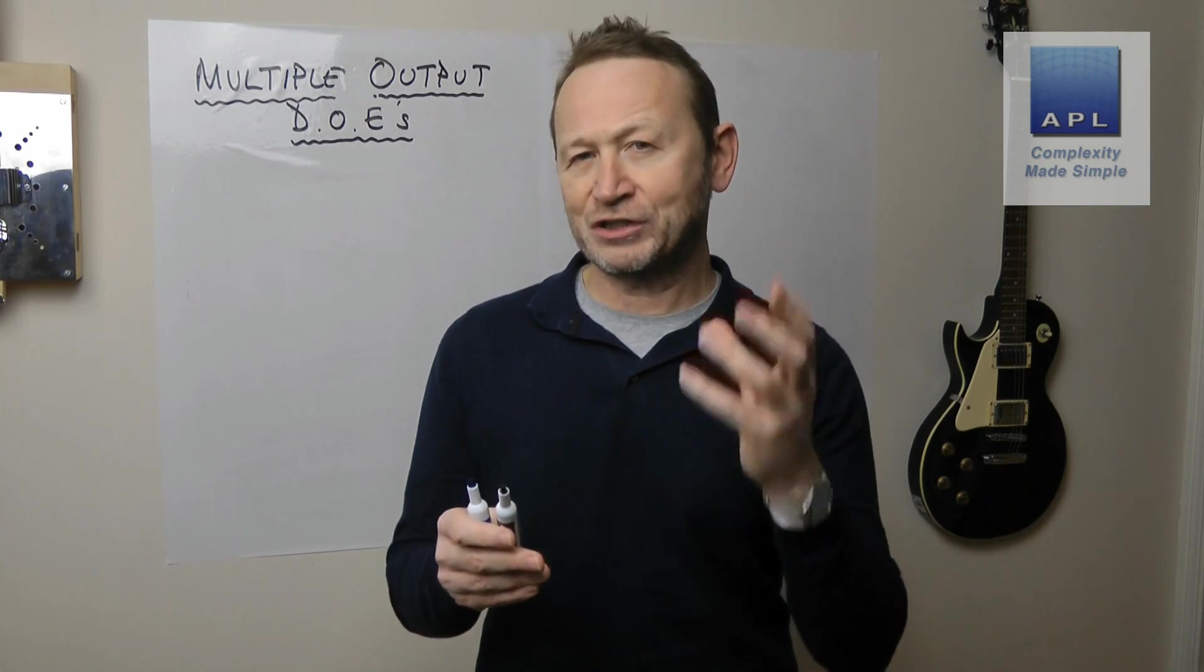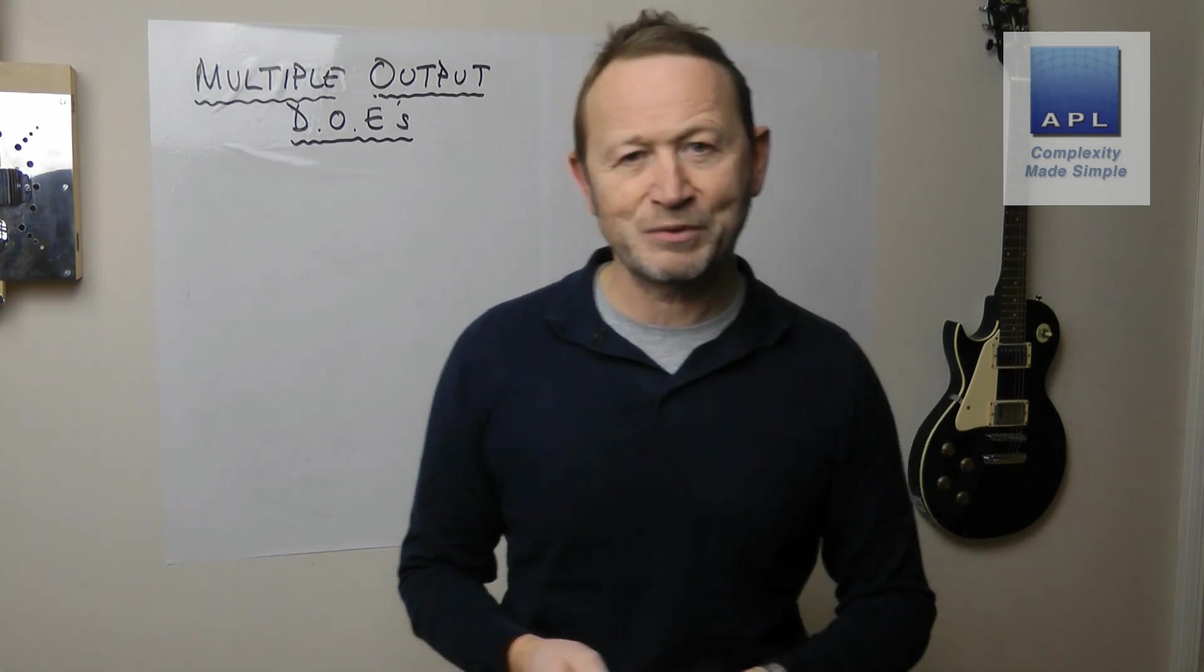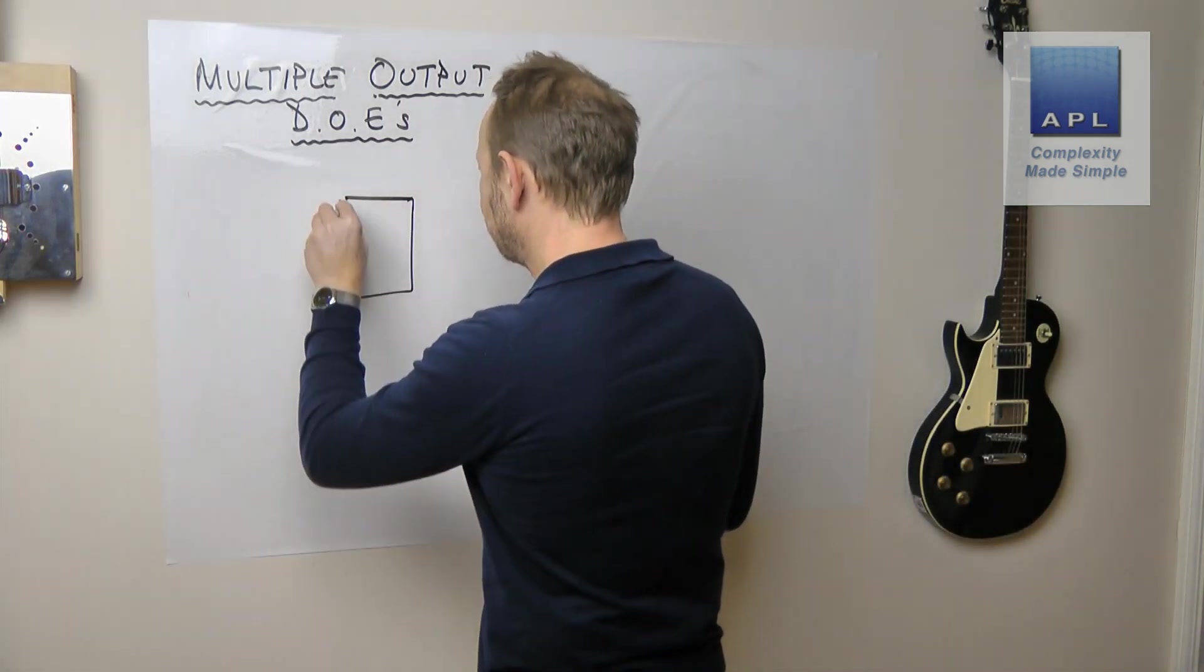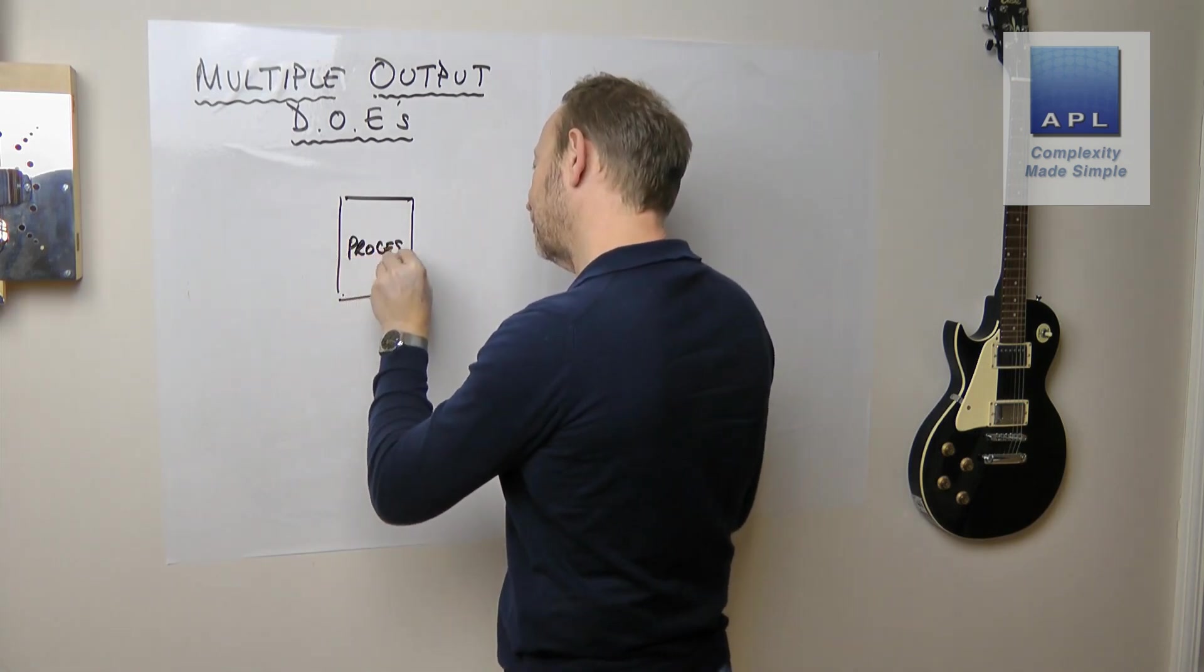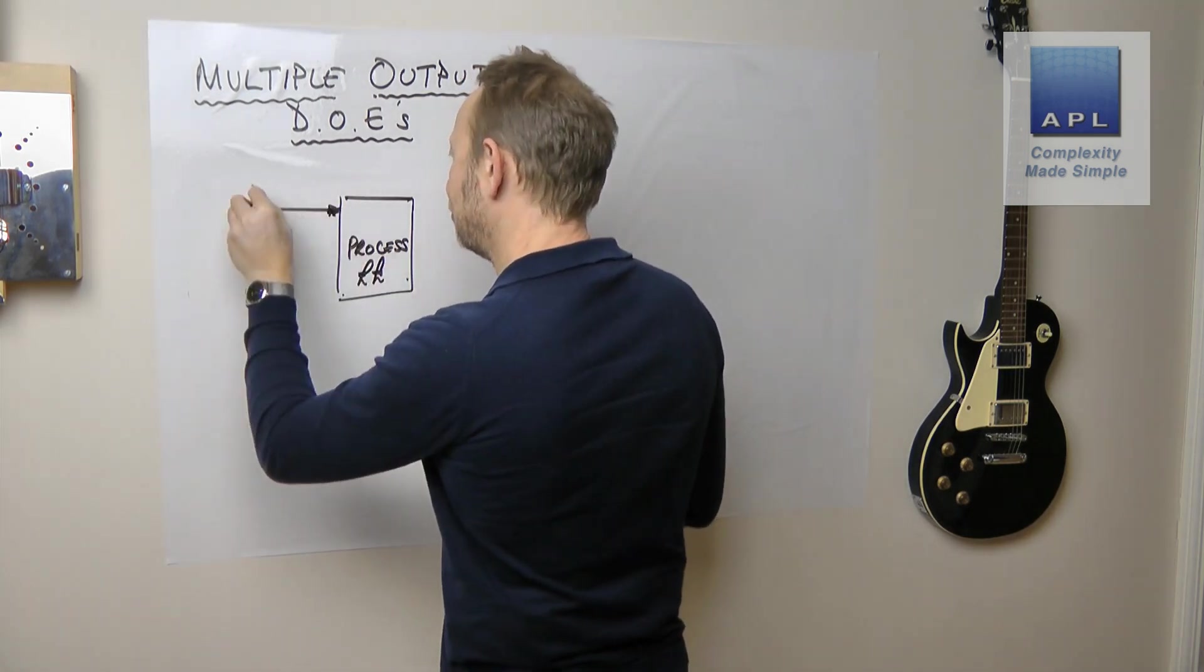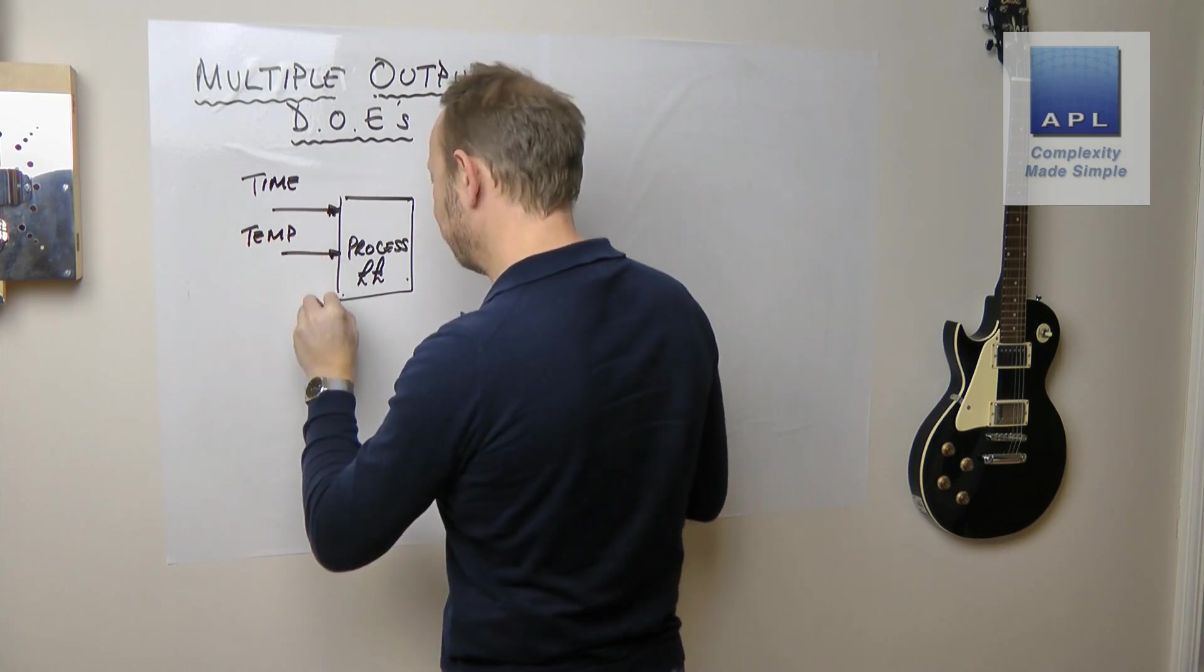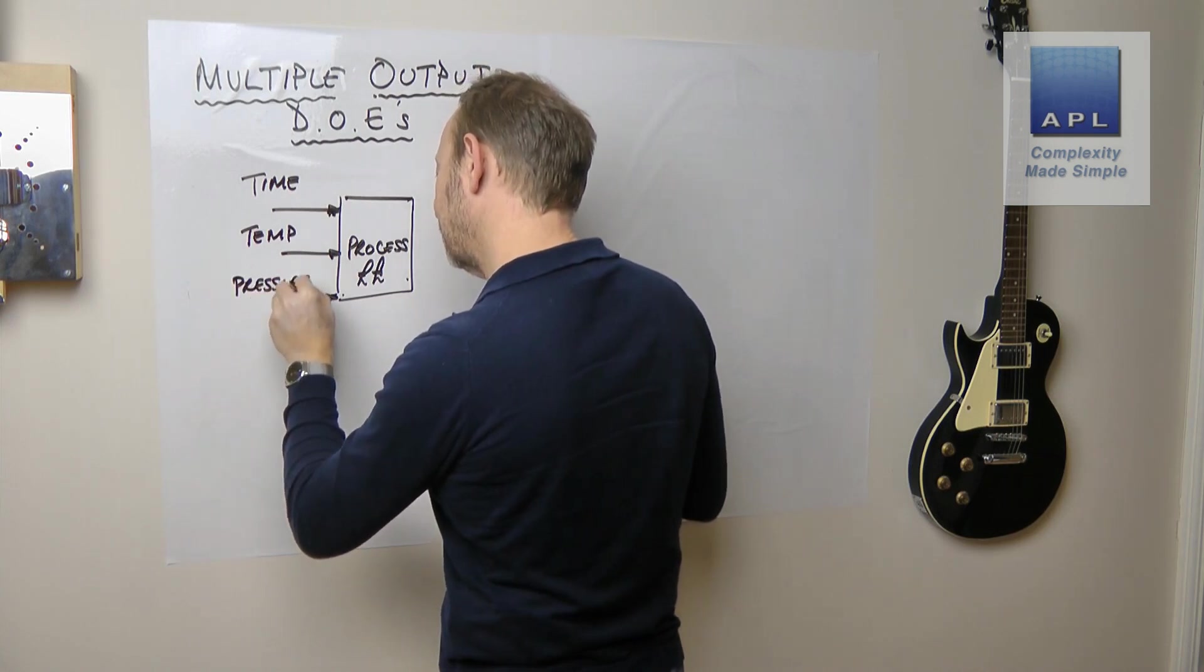Later on I do occasionally show them an example of a multiple response output, but I usually get them to practice on single output DOEs. But what we're talking about here is a process. So you have your process here, your money-making process, and Sadiq is talking about something like this. So we have three inputs: time, temperature, pressure.